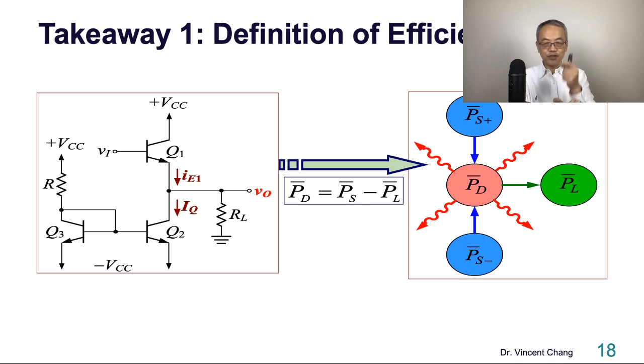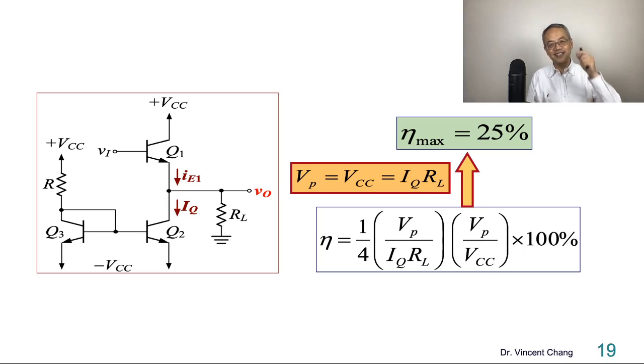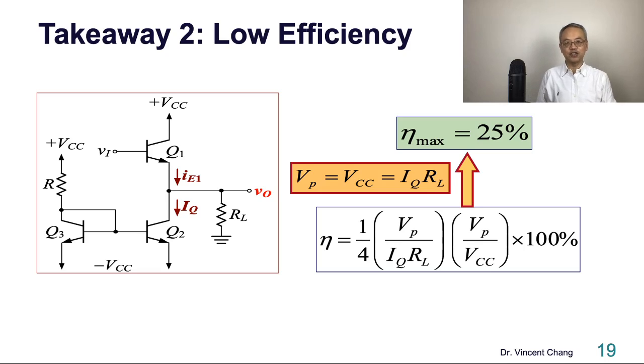So here's the takeaway. The first takeaway is the definition of efficiency. I hope you can get understanding. Don't try to memorize the formula. You got to understand the meaning of the definition. So load power and supply power. Definition of efficiency. Number two, in terms of efficiency, this kind of sucks. It's a low efficiency stage, low efficiency, the best scenario 25%. So takeaway, I hope you can not only understand the detail, how to get the calculation of the efficiency, but understand every detail of the process throughout the definition, throughout the derivation of the efficiency process.